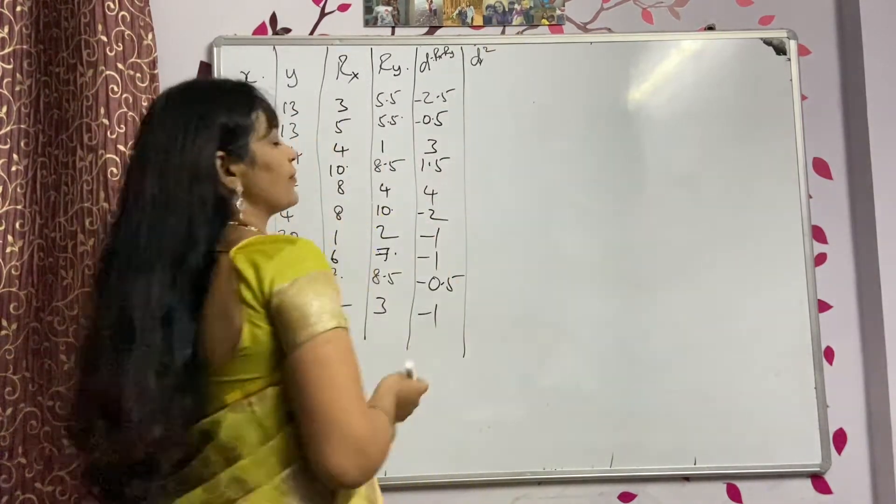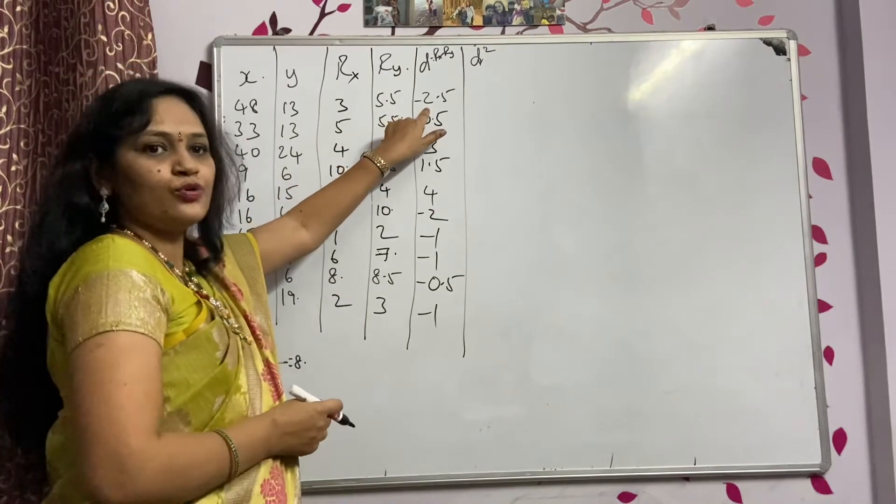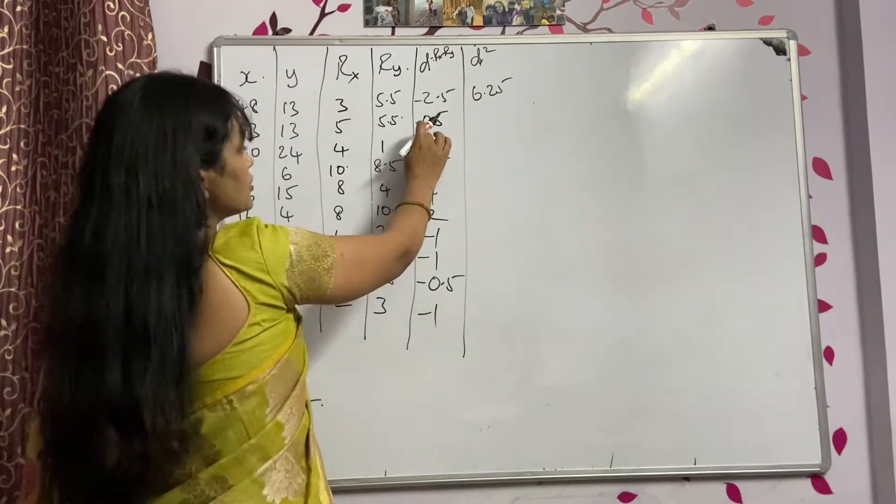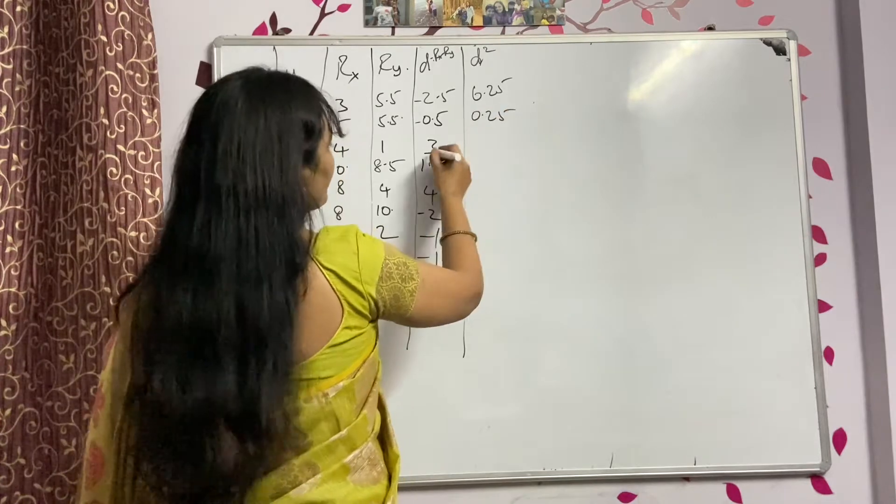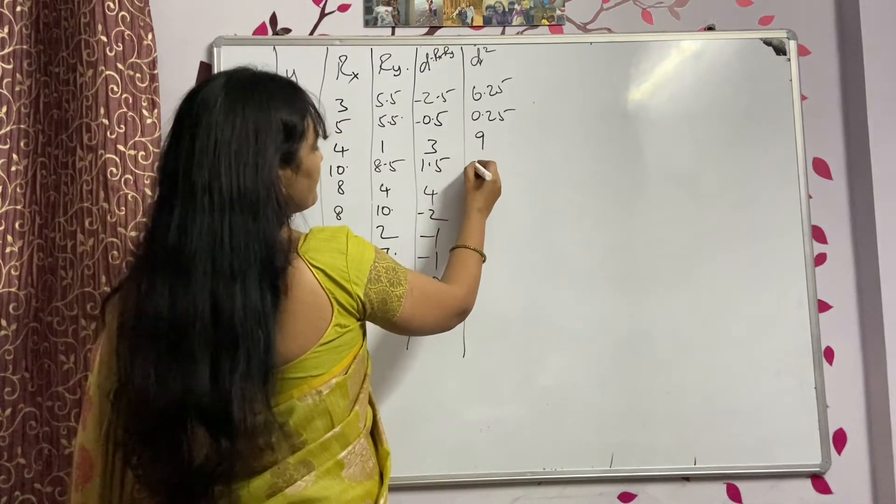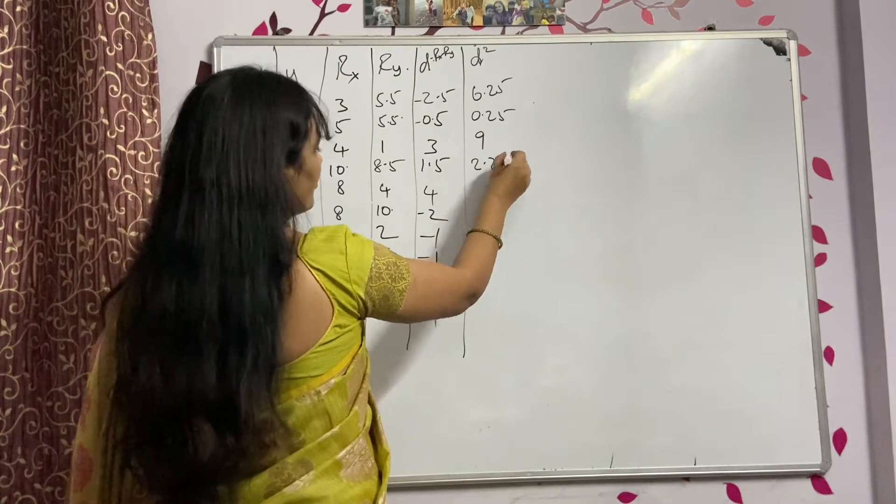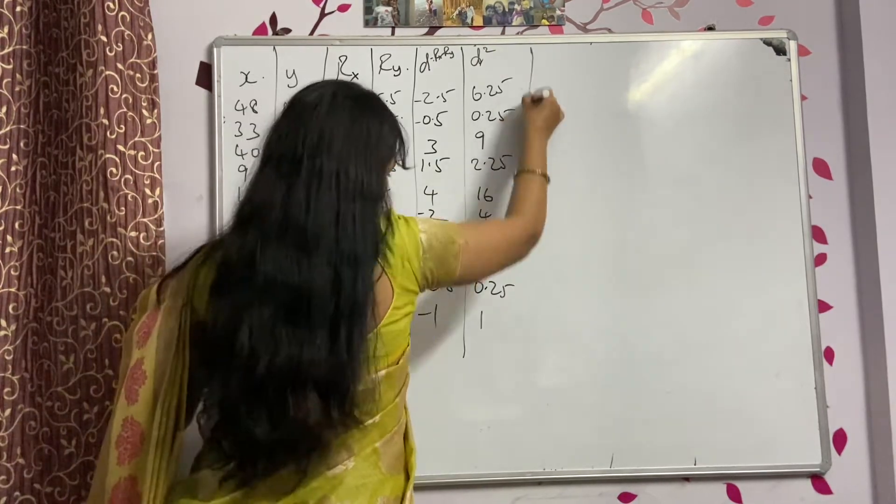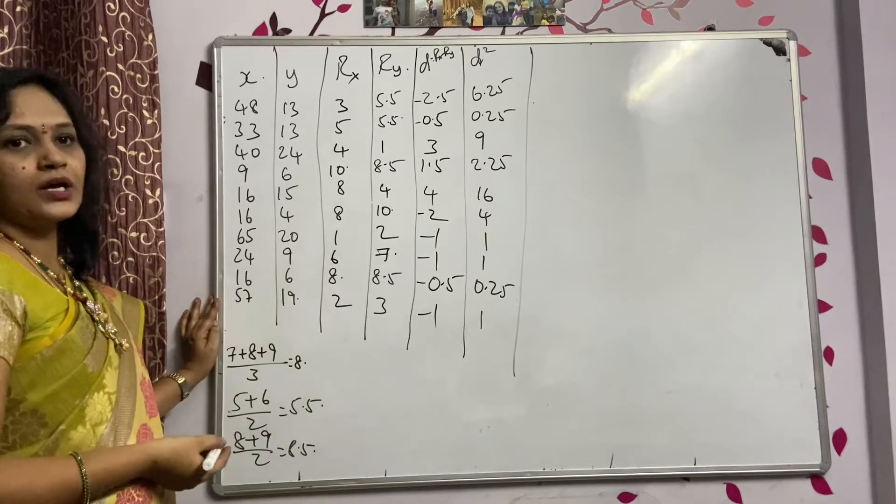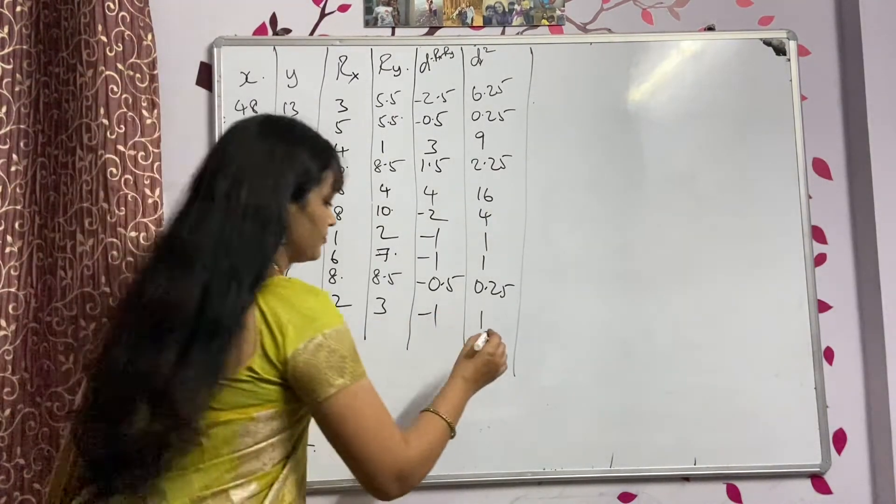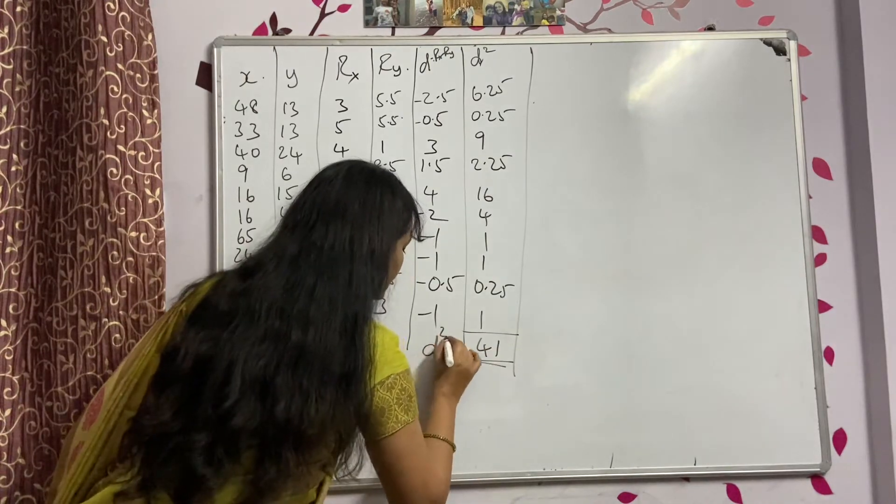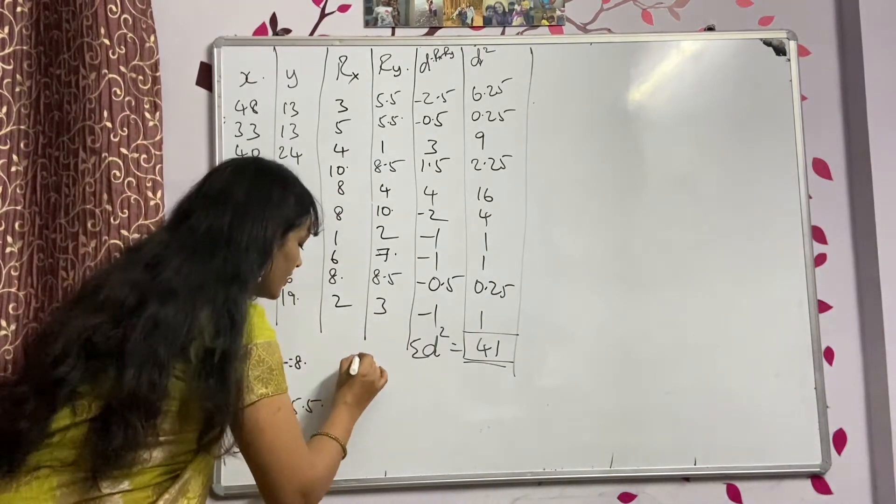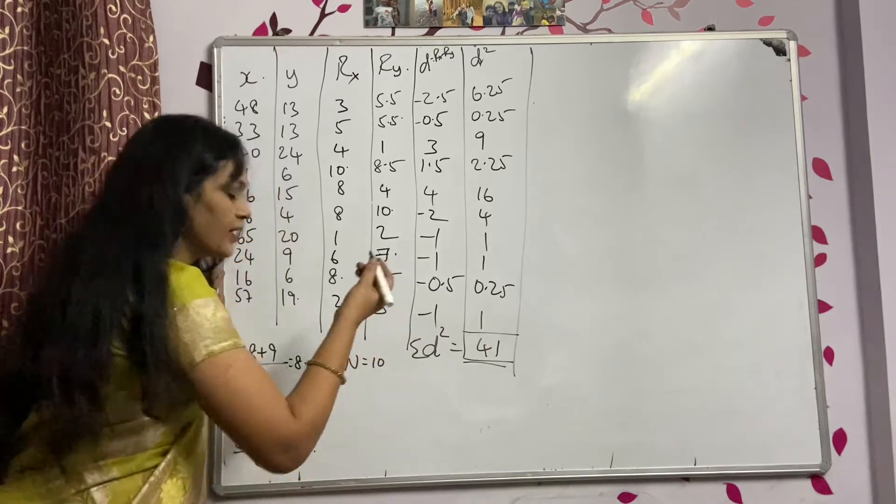Now let us find out D squared. So D squared, this value into same value. 2.5 into 2.5, 6.25. 0.5 into 0.5, 0.25. 3 into 3, 9. 1.5 into 1.5, 2.25. 4 times 4 is 16. 2 times 2 is 4. 1 times 1, 1. 0.25 and 1. Cross briefly once again. What is the total? Now do the total. What is the total? 41. The total is 41. D squared, summation D squared is equal to 41. What is N here? Total number of ranks. How many we got? 10.